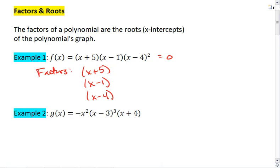So we find that if x is -5, that makes the output 0. If x is 1, that makes the output 0. And if x is 4, that makes the output 0.